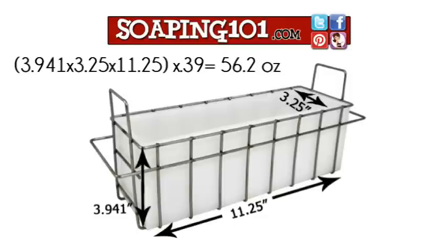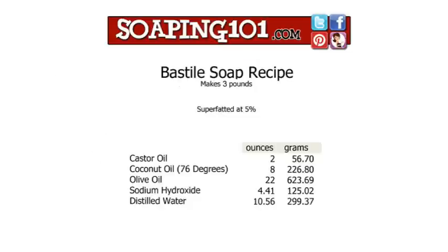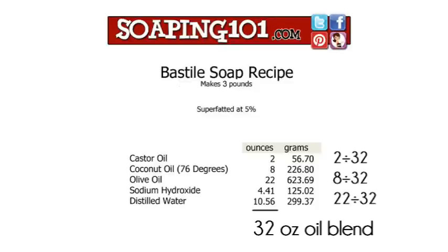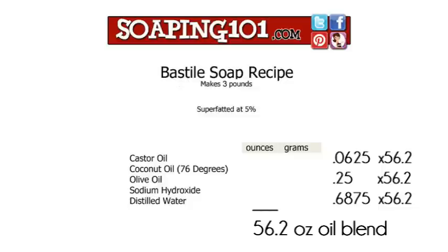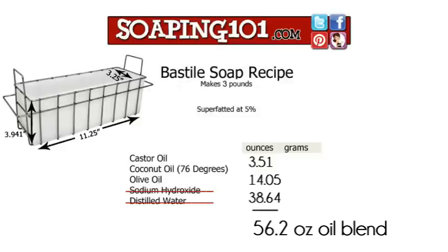Let's say our new mold size holds 56.2 ounces of oil. How will we resize the recipe to make it fit? Step 1: we first need to determine what percentage each oil is in our recipe. As we did before, we divide each oil by the total base amount. Step 2: we then take our percentage and multiply each by the new oil blend total of 56.2. And there you have it — our recipe is now resized for our new mold.